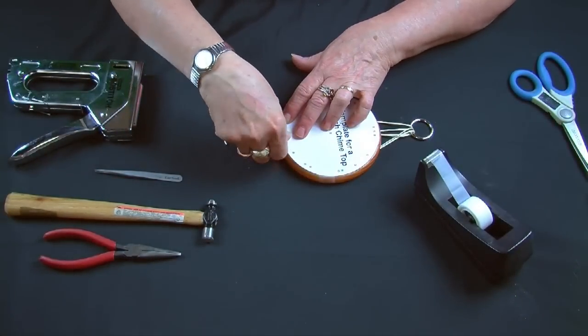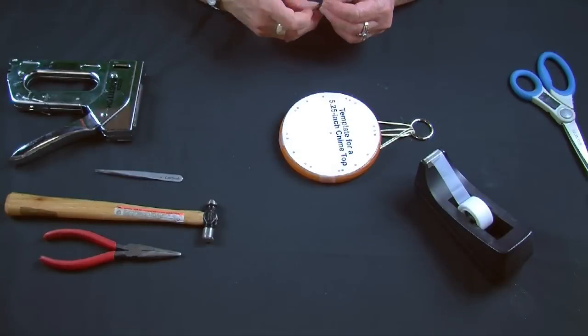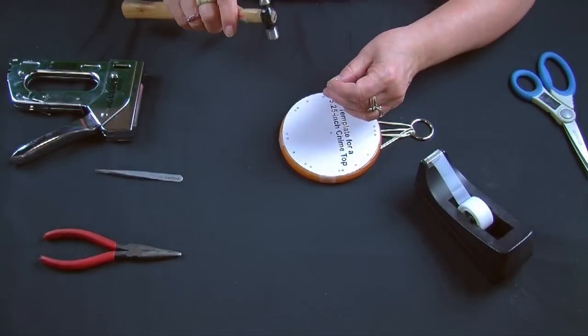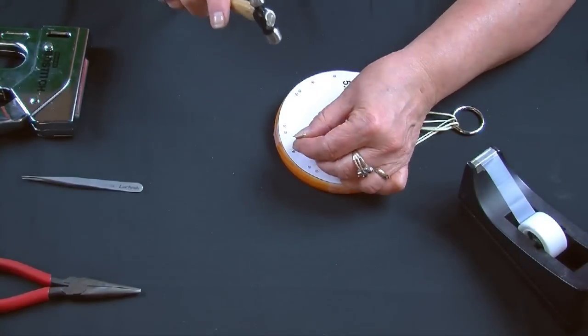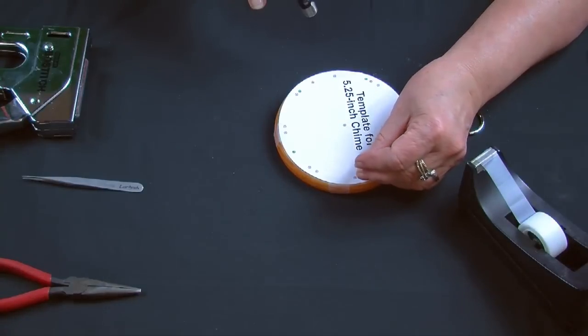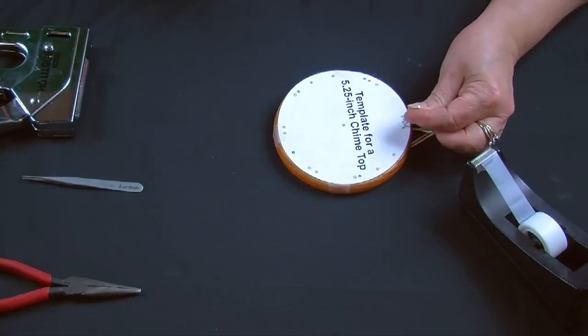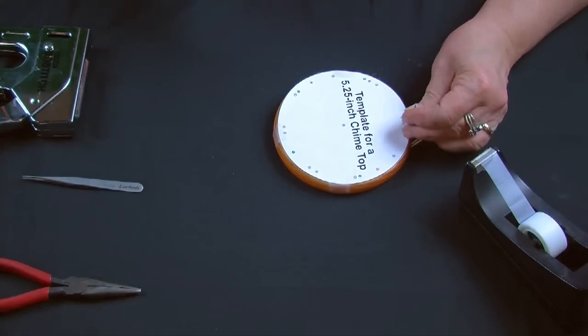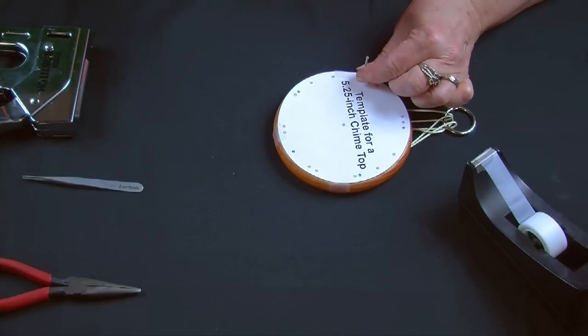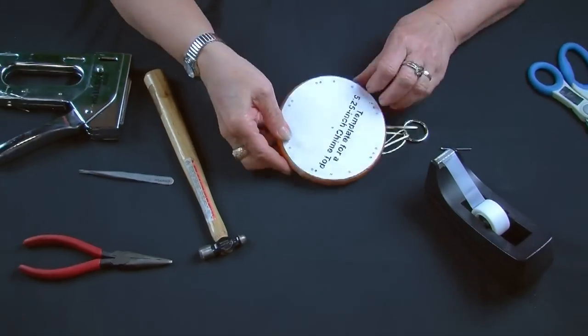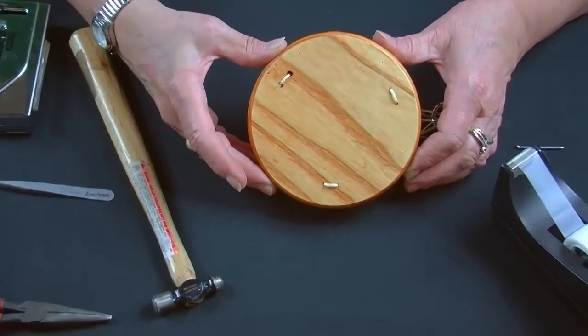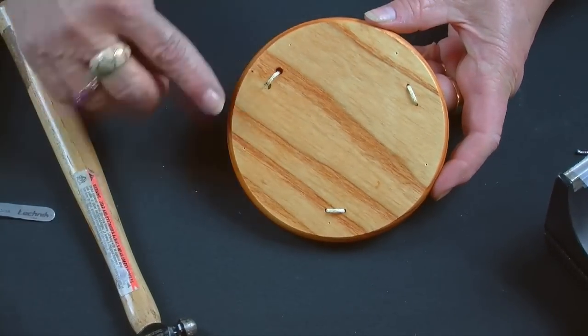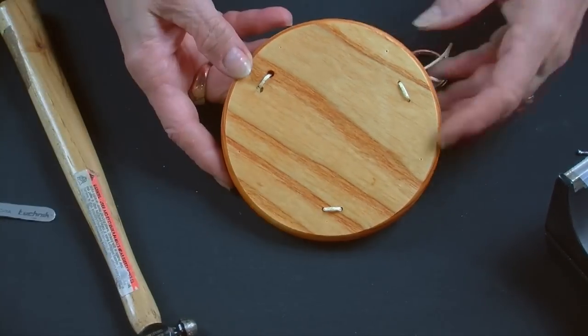Since there are six tubes, we'll use the red markings and tap the nail lightly with the hammer to score the wood at each attachment point. Don't forget to also mark the center where you will want the clapper and wind catcher to hang.